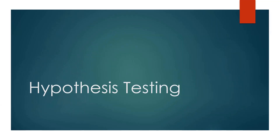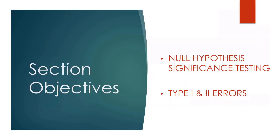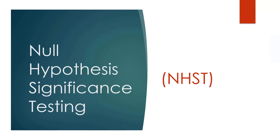Welcome back, everybody. We are getting into our next topic as we're laying this foundation for inferential statistics. We've covered probability and inference so far. Now we're going to cover our third building block: hypothesis testing. What we're going to cover in this section is something called null hypothesis significance testing, and then some problems that come with that process called type 1 and type 2 errors. We're going to spend most of this time breaking down null hypothesis significance testing because that's the main focus here.